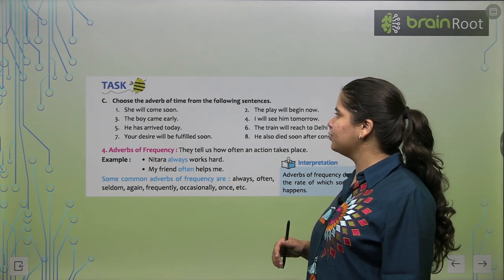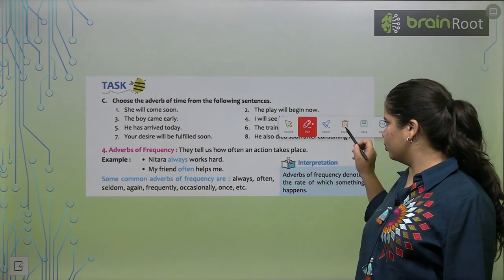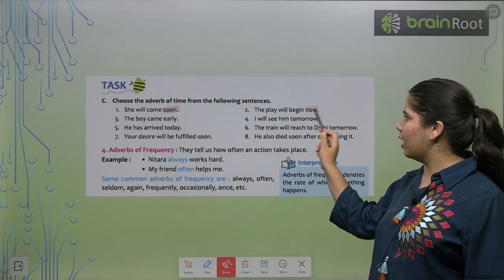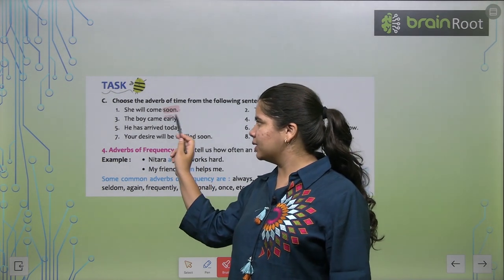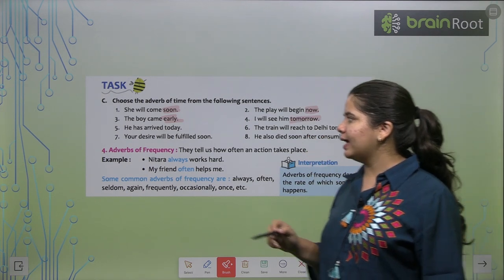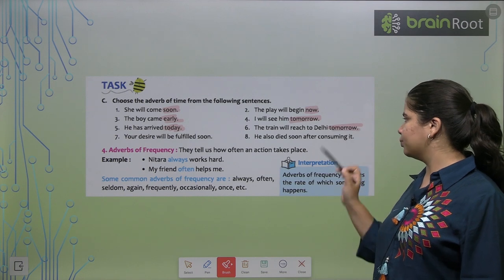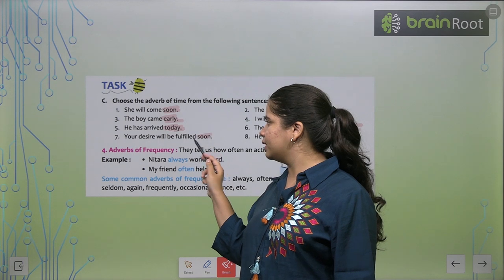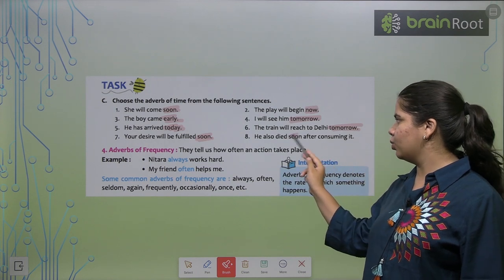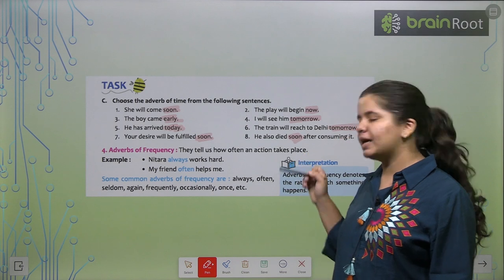Let's choose the adverb of time from the following sentences. She will come soon. What is our adverb of time? Yes, soon. So you just have to choose it. I am highlighting it for you. Second, the play will begin now. So now is our adverb of time. Next, the boy came early. Early is our adverb of time. I will see him tomorrow. Tomorrow is the adverb. Next, he has arrived today. So what is it? Today. The train will reach to Delhi tomorrow. Your desire will be fulfilled soon. He also died soon after consuming it. So soon. This is adverb of time. All these words are in which category? Adverb of time category.